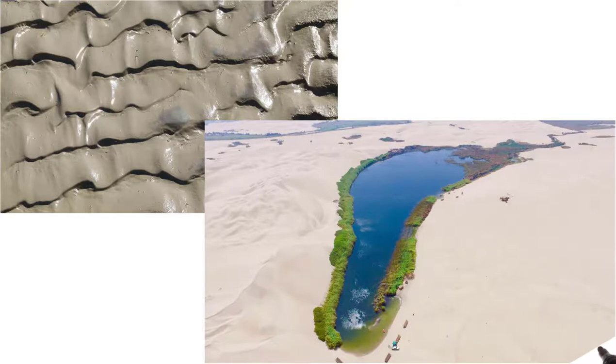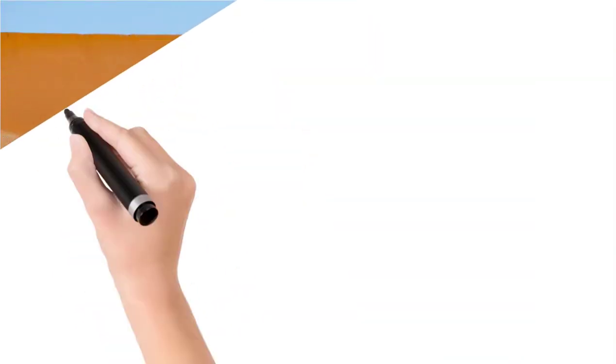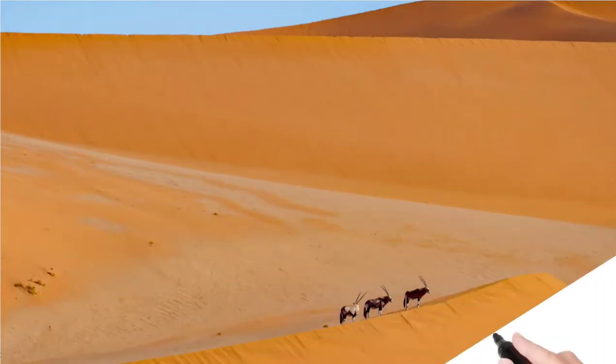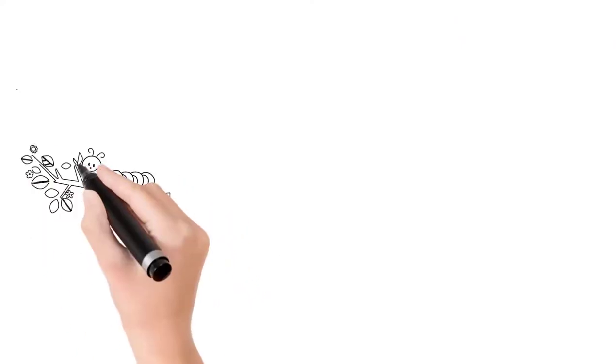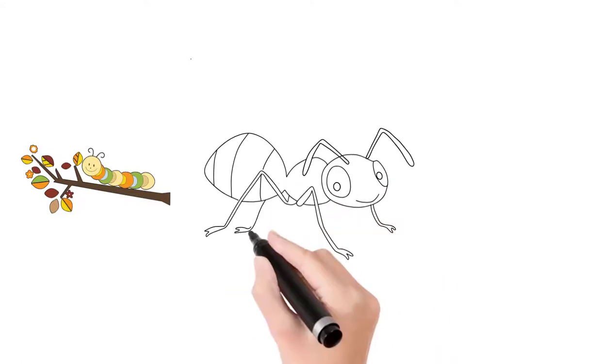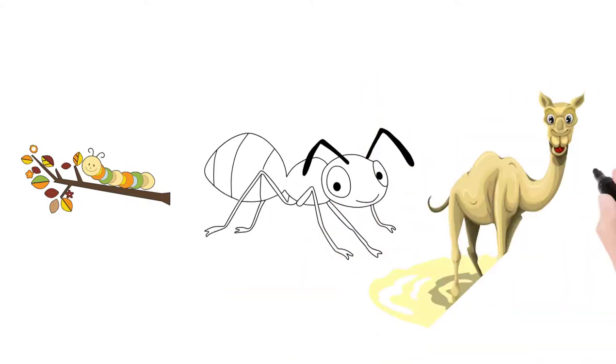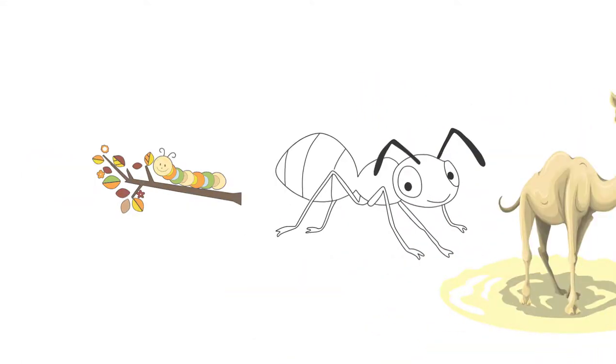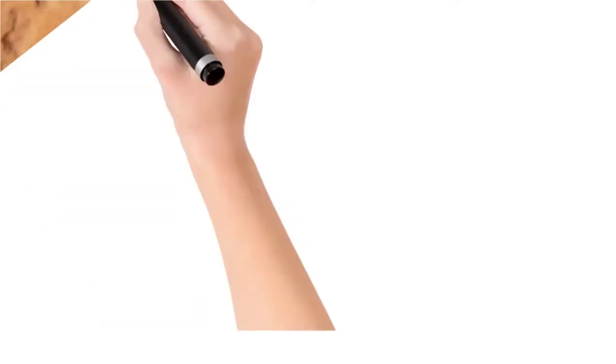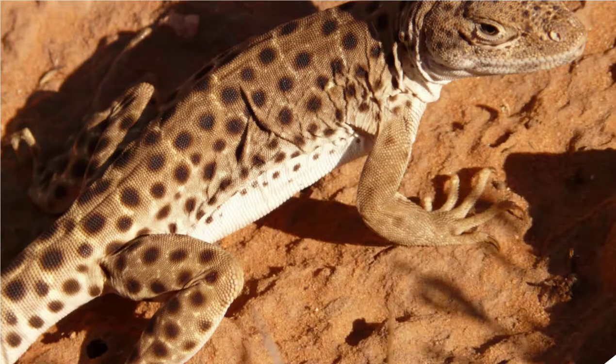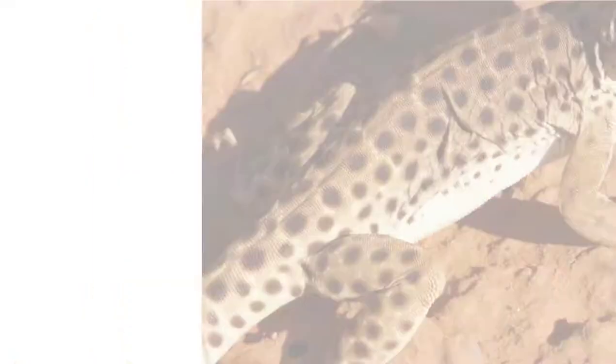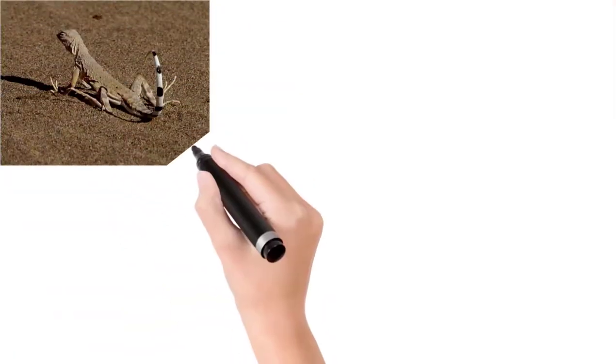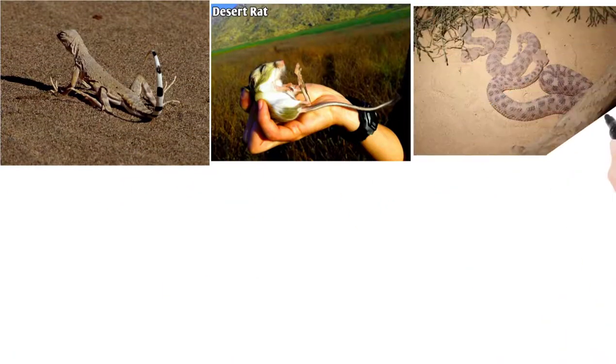Now let's talk about desert animals, how these animals survive in such a hot and cold region. By the way, there are not as many animals in the rain forests, but the animals that live in the desert rarely survive in the rain forests. In fact, these animals have many ways to survive in this desert environment. The majority of the animals that live in the desert are lizards, small rats, snakes, and camels.